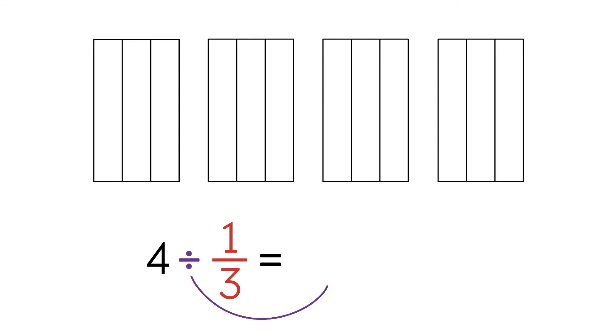So 4 divided by 1 third is the same as 4 times 3, which is 12.